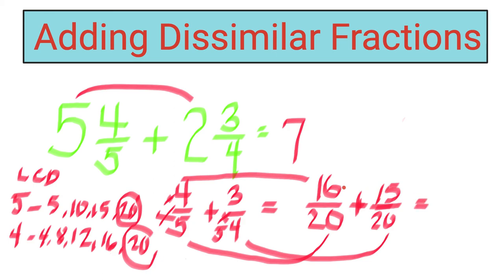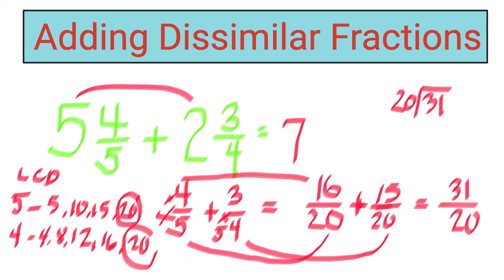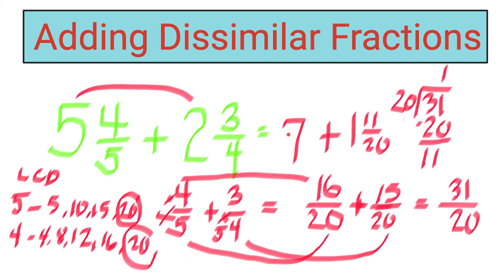Now add: sixteen plus fifteen gives thirty-one. Copy the denominator, which is twenty. But this is an improper fraction, so it's not yet simplified. We change it to a mixed number: thirty-one divided by twenty gives one. One times twenty is twenty. Thirty-one minus twenty is eleven. So the mixed number is one and eleven over twenty. But take note, we have the whole number seven. So seven plus one gives eight, and we copy the proper fraction eleven over twenty.